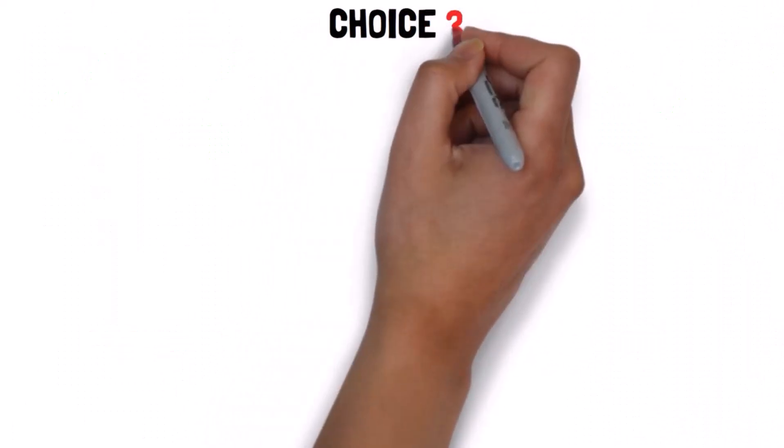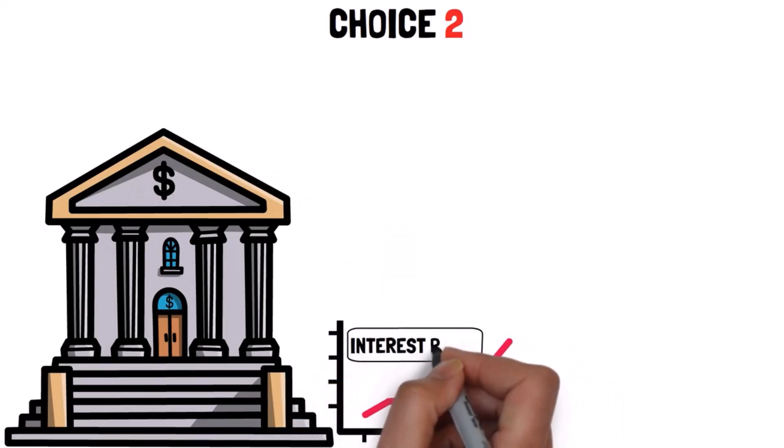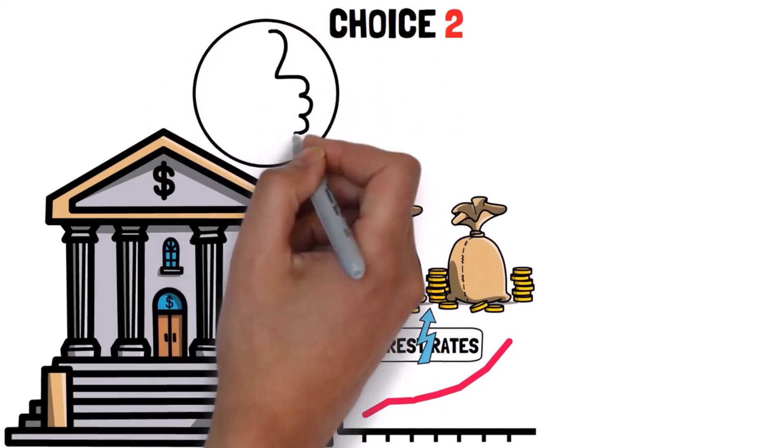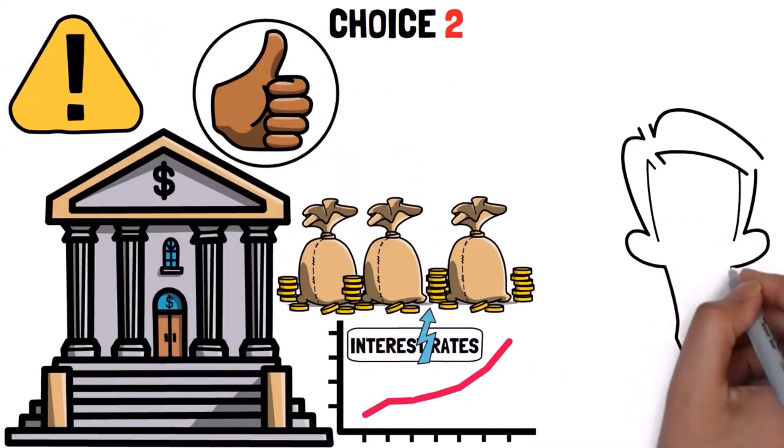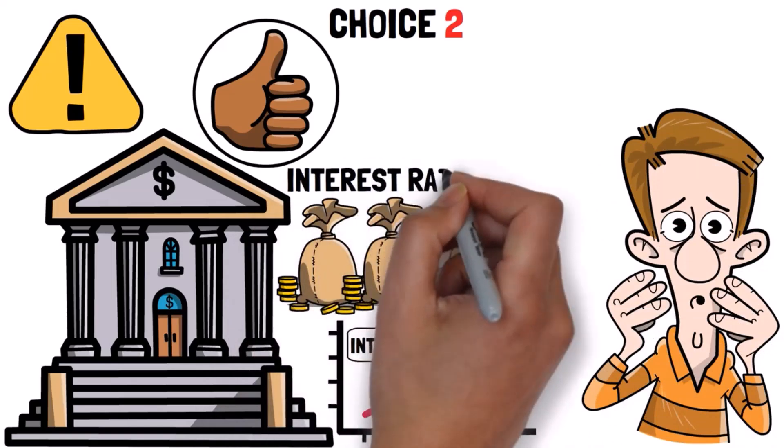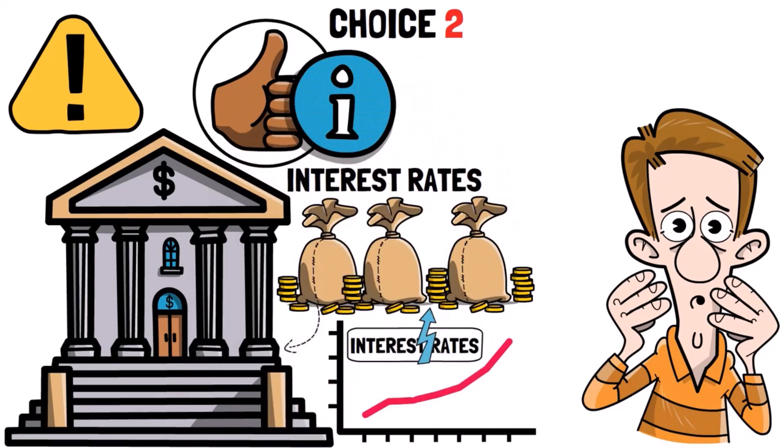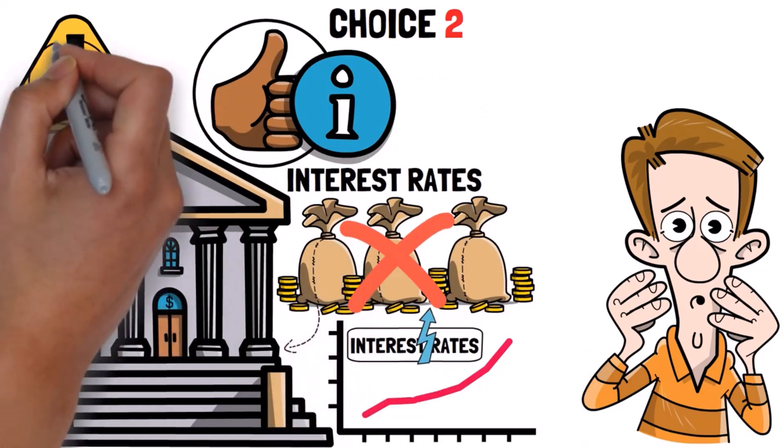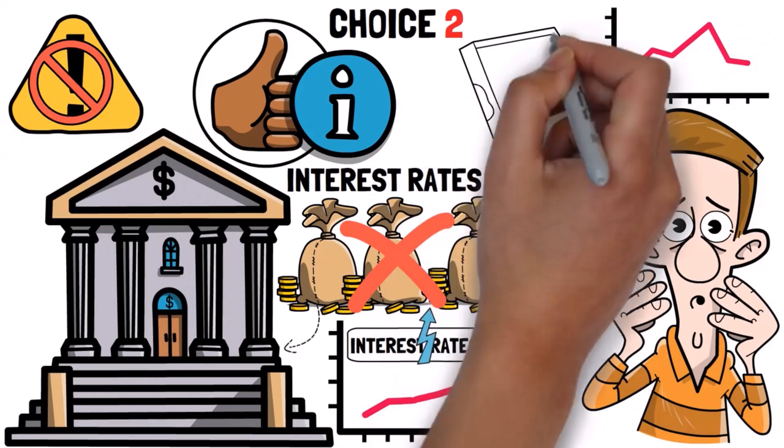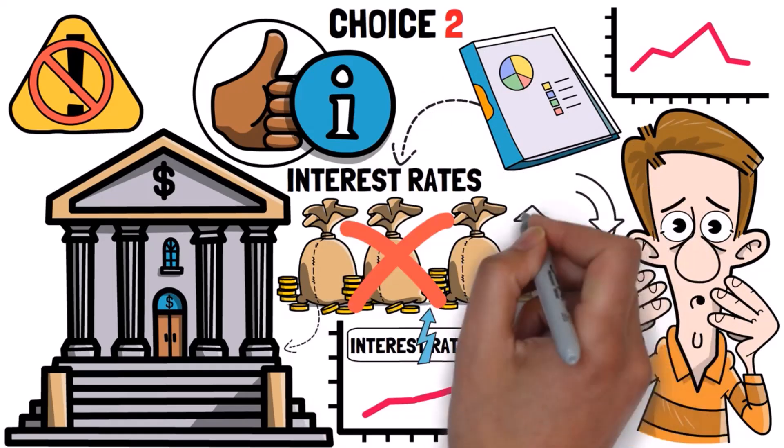Choice two: The banker can decide to do something else. When prices start rising too fast, the banker can increase interest rates instead of lowering them. This makes it harder for people to borrow new money and they have to focus on paying off their old debts. This might sound good, but it has its problems too. It can cause economic pain because paying off debts becomes more expensive. So the damage is actually done during the good times when people make decisions based on the wrong information caused by changes in interest rates and the amount of money in circulation.